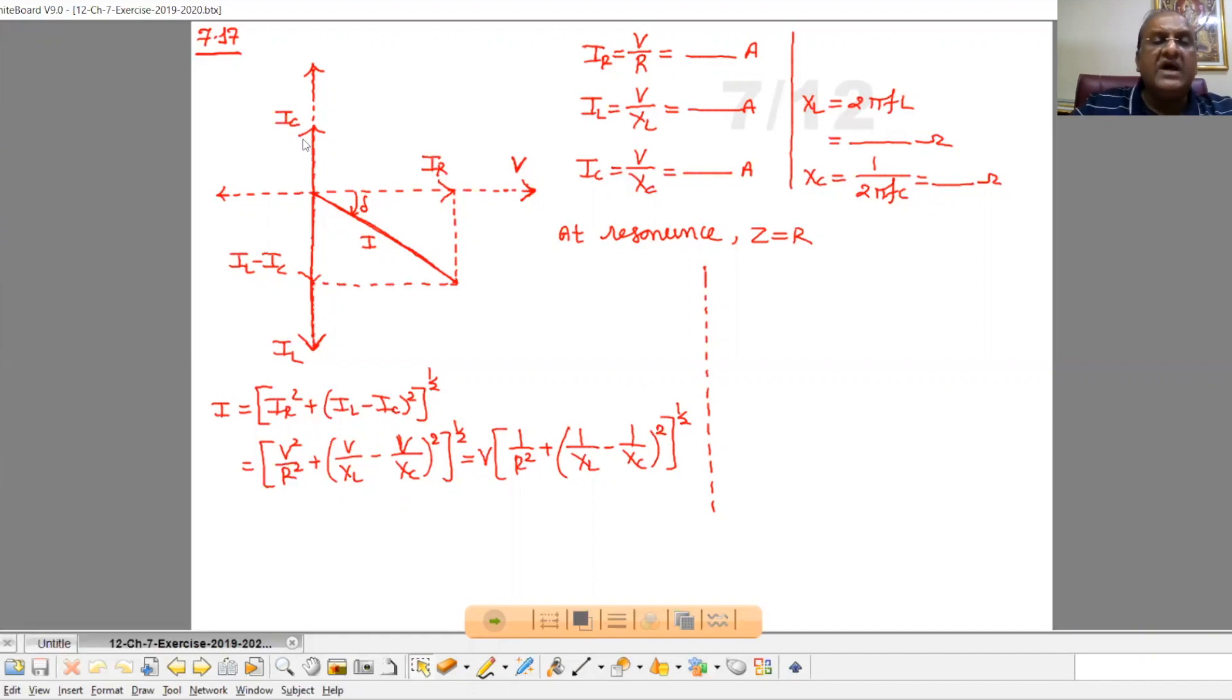Now the resultant current is IL minus IC. This IR and IL minus IC will give you the resultant current I. From this phasor diagram we can write I = √[IR² + (IL - IC)²], where IR = V/R.